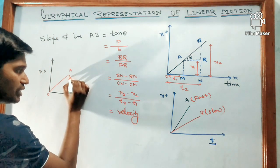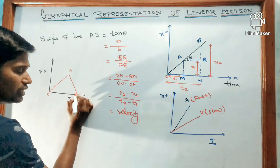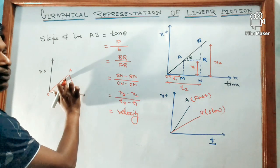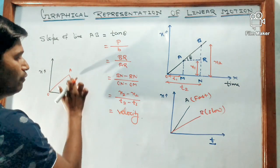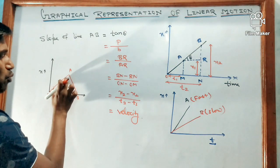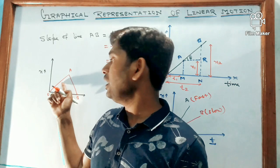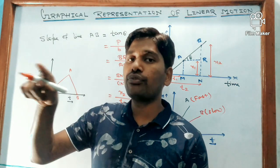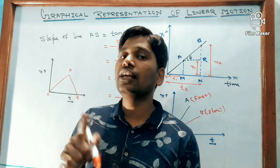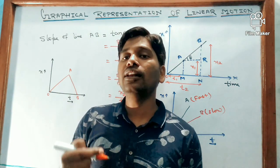When the body hits the wall and returns, displacement starts decreasing. This part AB represents the body returning to its initial position. For OA the slope is positive, and for AB the slope is negative. Positive slope represents the body moving away from its initial point, and negative slope indicates the body is moving towards its initial point.